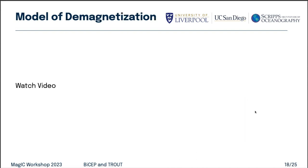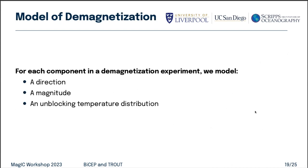There's a video. To unmix these components, you can model a demagnetization experiment. You have three things to model: a direction of each component, a magnitude of each component, and an unblocking temperature distribution for each component. This can be done with AF demagnetization or microwave demagnetization — the same principle, just a coercivity spectrum or microwave power spectrum.